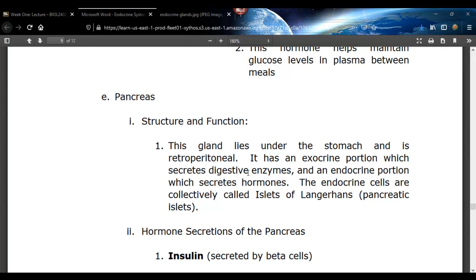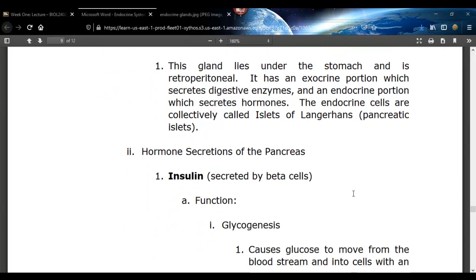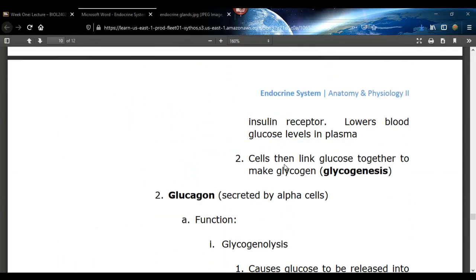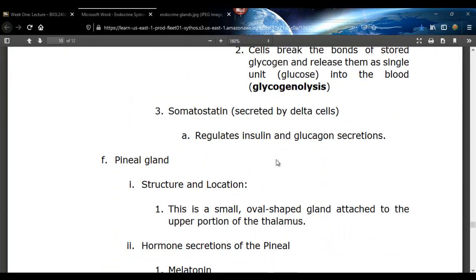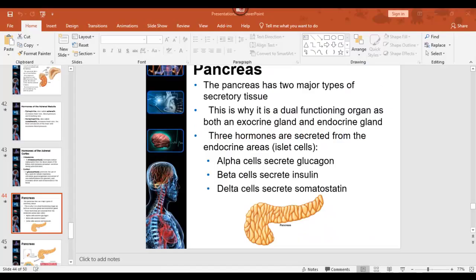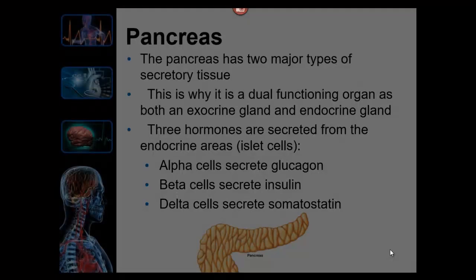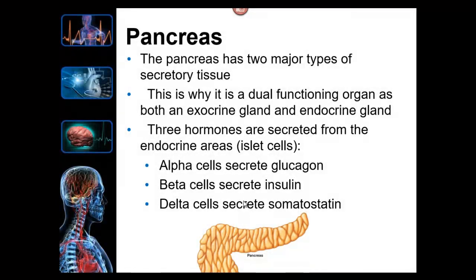The pancreas has an exocrine portion which is digestive — we'll go over that later. The endocrine part is called the islets of Langerhans. The hormones produced are insulin, glucagon, and somatostatin. Beta cells produce insulin, alpha cells secrete glucagon, and delta cells secrete somatostatin. These cell types are all found within an islet of Langerhans.